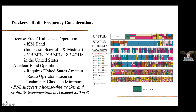The license-free band means you don't have to have a call sign, take any exams, or file any paperwork to use these bands. Typical frequencies are 315 MHz — you may be familiar with that from garage door openers — 915 MHz, which supports mesh network communications and is what the featherweight tracker uses, and 2.4 GHz, which is also shared with home Wi-Fi routers.